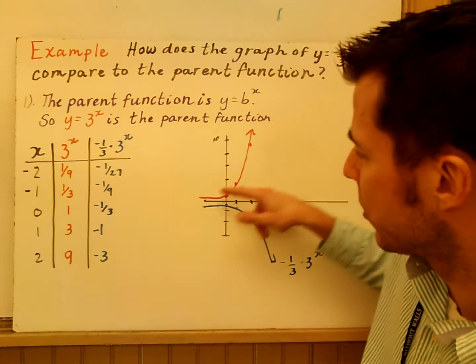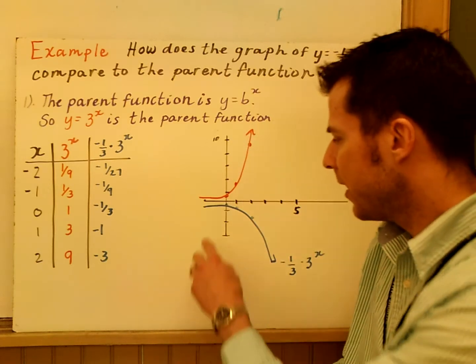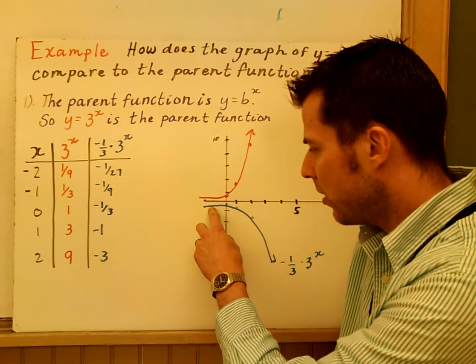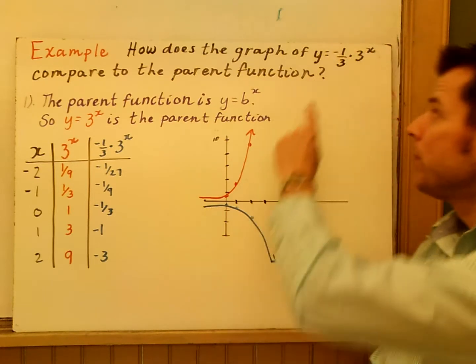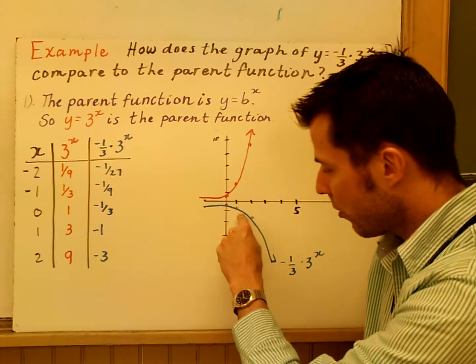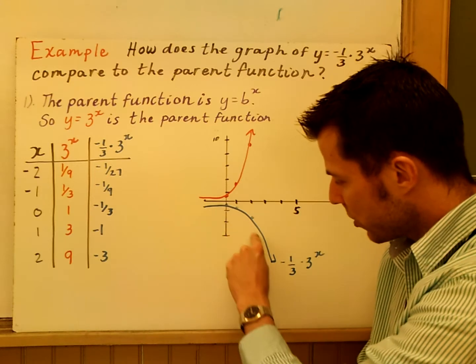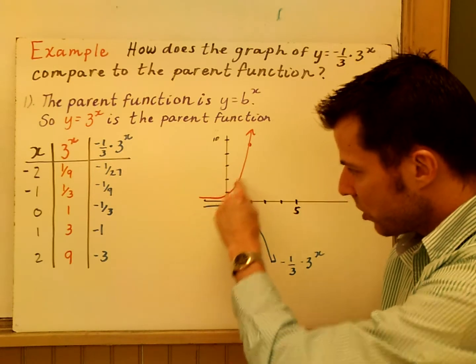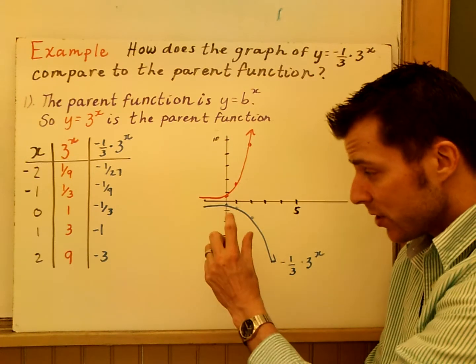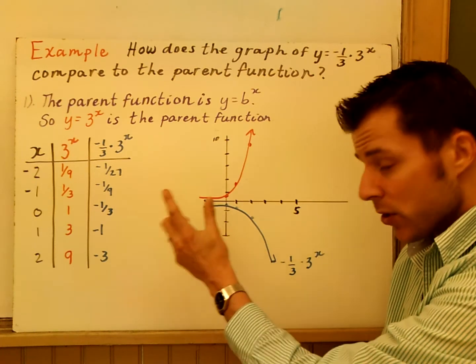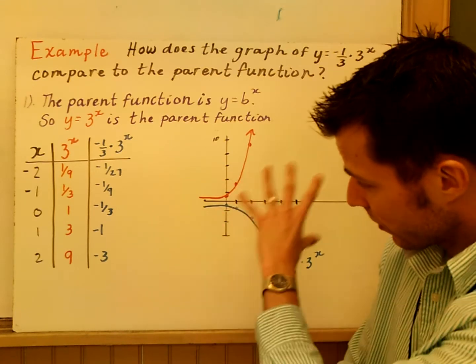In the red there is the parent function Y equals 3 to the X. I went ahead and graphed that. My scale is by 2 on the Y. And then here is my Y equals negative 1 third times 3 to the X. B is positive, so this is still growth, but it's growing negatively. That's a growth model here. It's growing more slowly than this. This should go up faster than our blue graph because our A value is negative and it's less than 1. And it's between 0 and 1, that absolute value is a fraction. It's growing much slower.